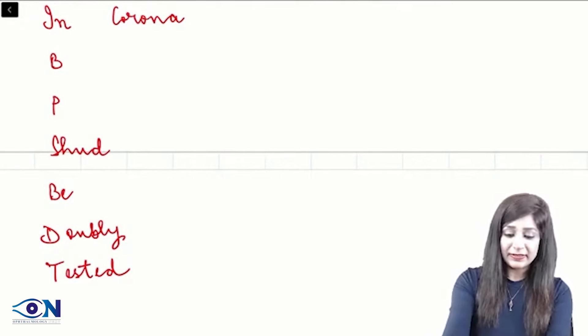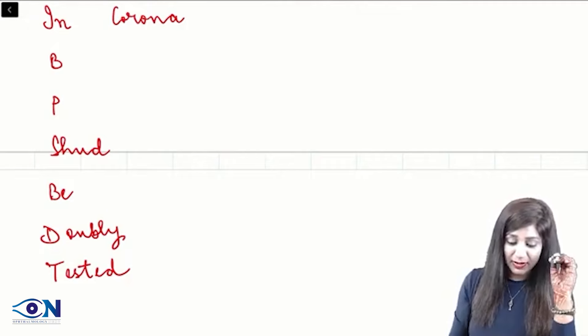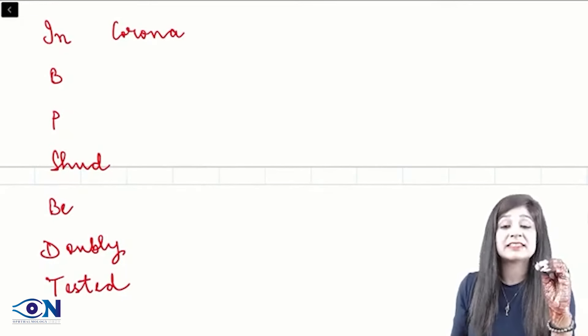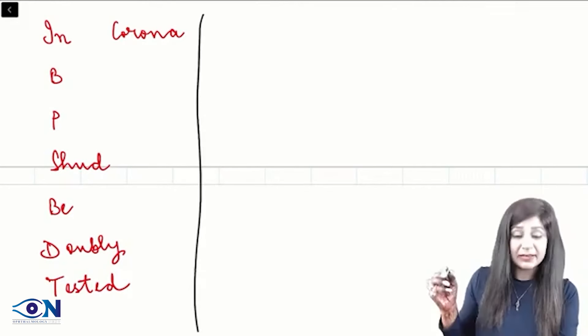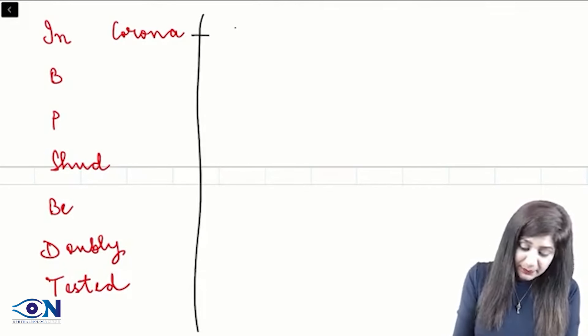Alright, so let's talk about the visual field defects. This is the order of the visual field defects. You can see this is a simple mnemonic. So, first will be the isopter contraction.